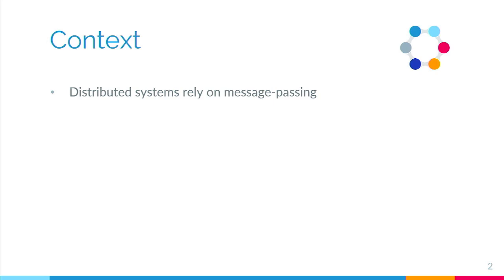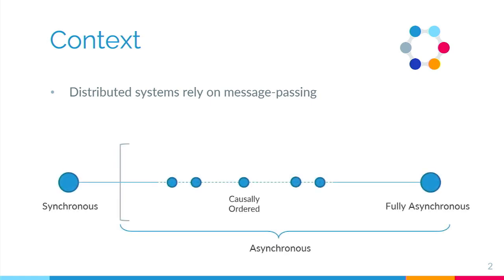In a distributed system, we have a set of participants, such as processes or devices, that exchange messages. The way that these messages are exchanged is controlled by the communication model. Broadly speaking, we have two main kinds of communications: synchronous communication and fully asynchronous communication. In synchronous communication, the sending and the receipt of a message are viewed as a single entity, meaning they happen simultaneously. Whereas in the asynchronous world, we decouple the sending of a message from its receipt.